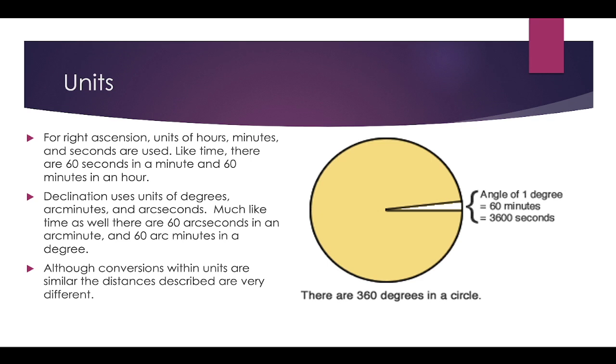And then although these conversions with the units are similar, the way they describe them, their distances they describe are actually vastly different. So knowing that declination is degrees, arc minutes, arc seconds, and right ascension is hours, minutes, seconds, is actually pretty vital.